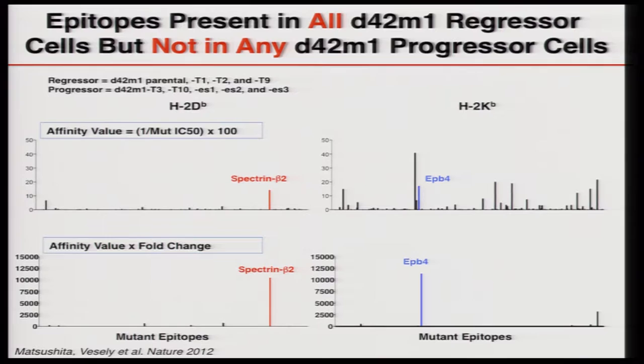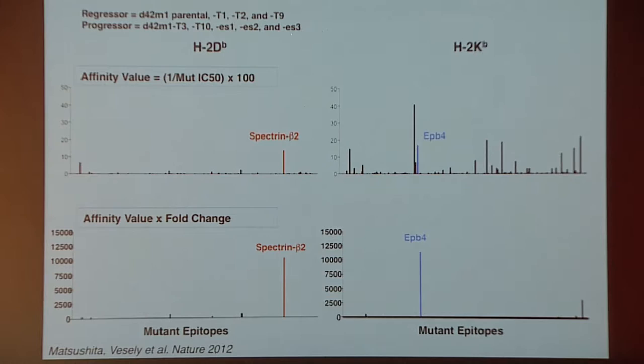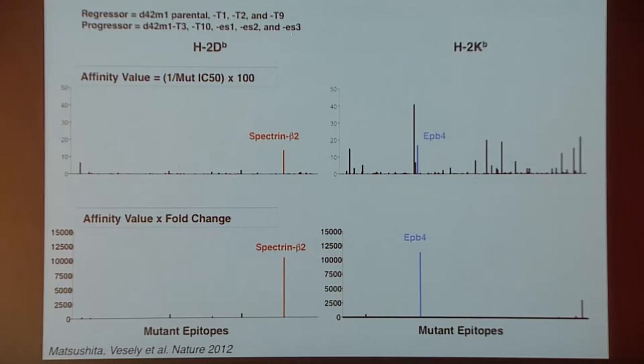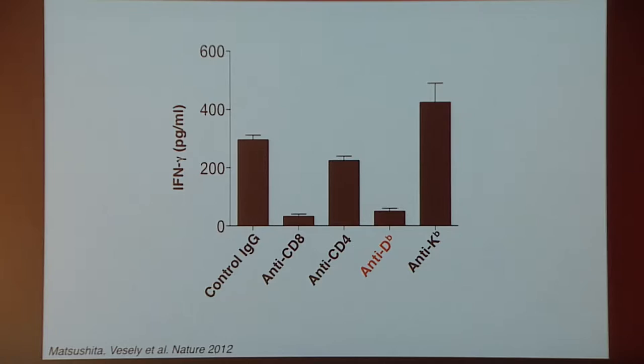You could then go back and filter the data, simplifying it to just look at the forms of predicted epitopes shared between the regressor clones and the parental. We did one more filter, assuming that the best epitopes would be ones that bound poorly or not at all to MHC class I molecules in their wild-type sequence, but when you added the mutation would bind very tightly. Remarkably, when you did that, you simplified the predictions incredibly such that you really ended up with only two potential candidates: a mutation in spectrin beta 2 that bound to H2D of B, and a mutation in erythrocyte protein band 4 whose mutant peptide bound to H2K of B.